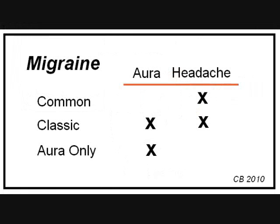The three types are: one, common migraine, which is the headache alone with no aura; two, classic migraine, which is aura followed by headache; and three, the aura alone — visual or otherwise — but with no following headache. The IHS terms are different, but I will stick with these historic names because they are familiar and easy to remember.